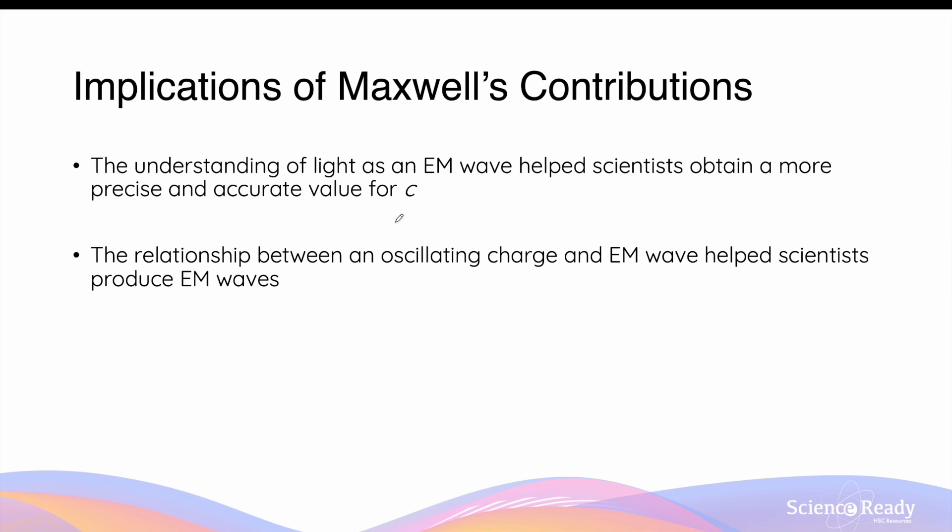Maxwell's theories and contributions are important because the new understanding of light as an electromagnetic transverse wave helped scientists obtain a more precise and accurate value for the speed of light. I talk more about how this is measured in numerous experiments in its own video. The relationship between an oscillating charge and electromagnetic wave production helps scientists produce various types of EM waves, such as radio waves, x-rays, etc.